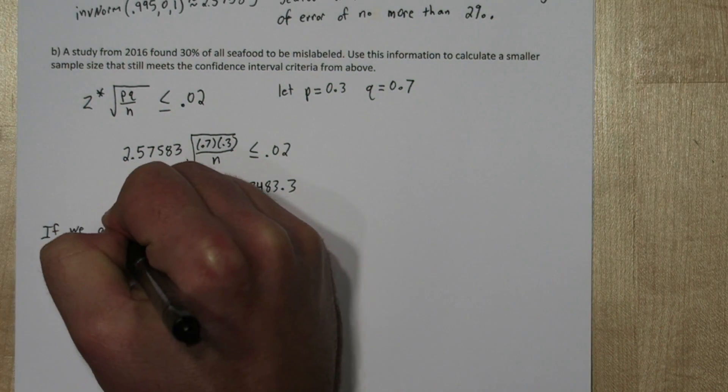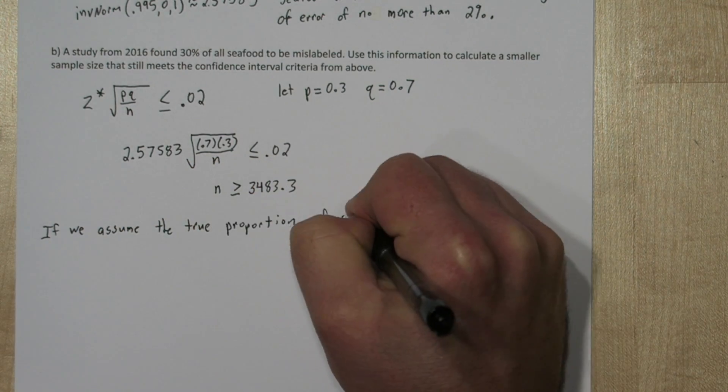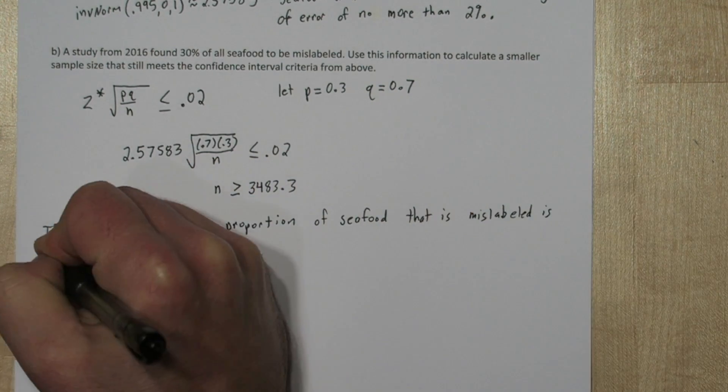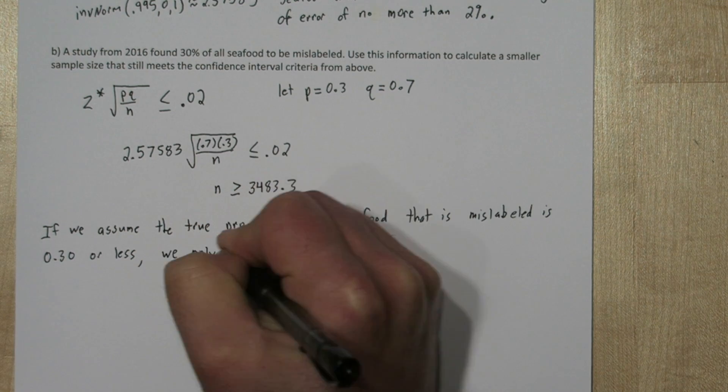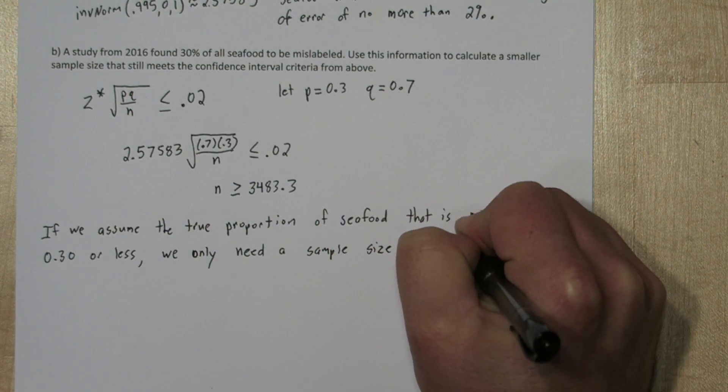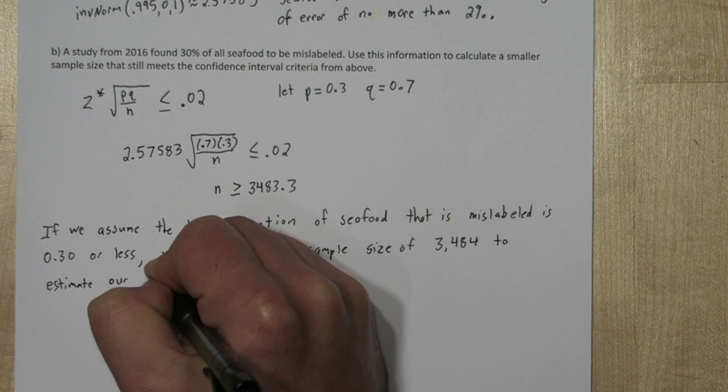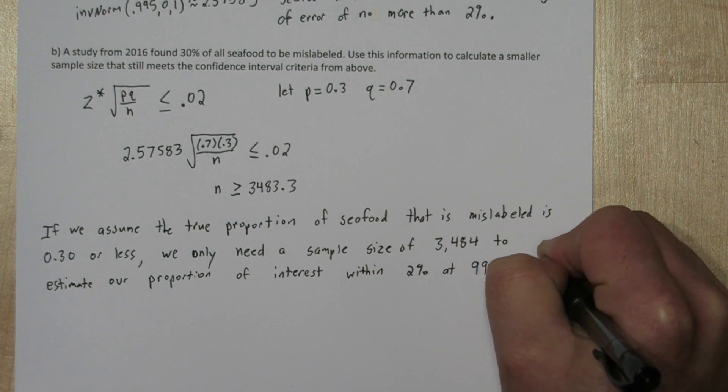If we assume the true proportion of seafood that is mislabeled is 0.3 or less, we'll need a sample size of 3484 to estimate our proportion of interest with 2% at 99% confidence.